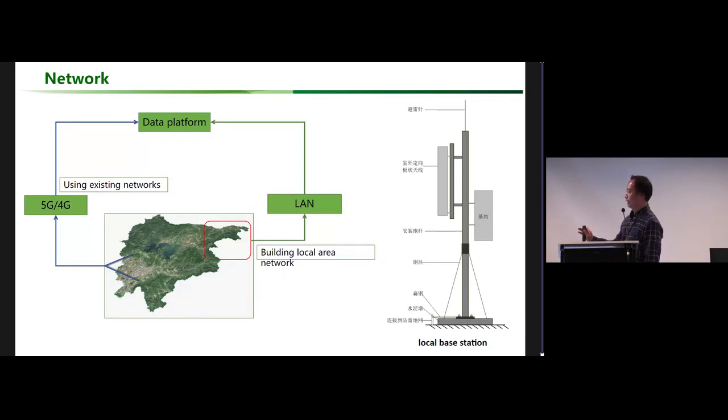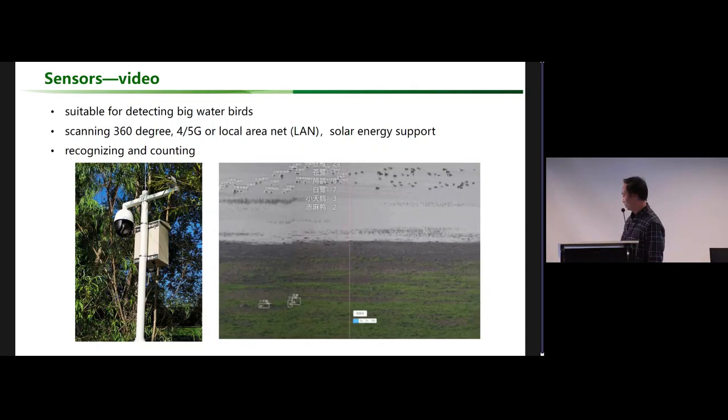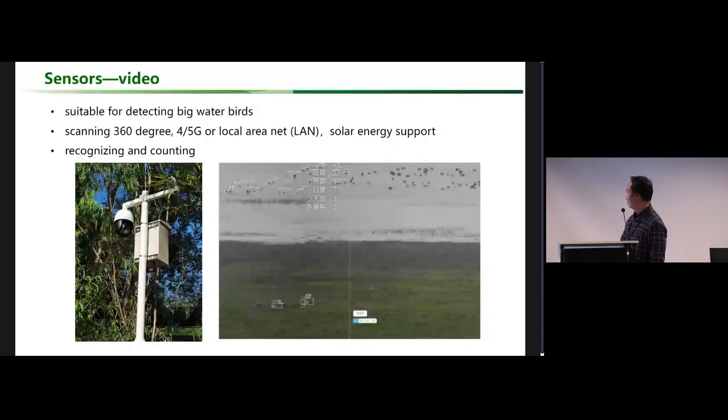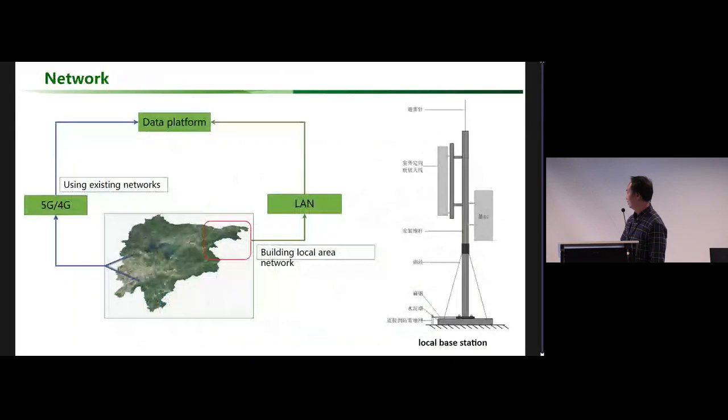For the network, we adopted a mixed strategy. When 5G or 4G is available, we use the existing networks. But in protected areas far from the city, we build a local area network for the detection system. This is the local signal base station.